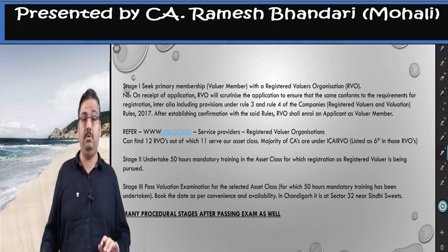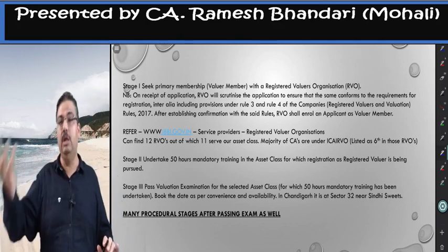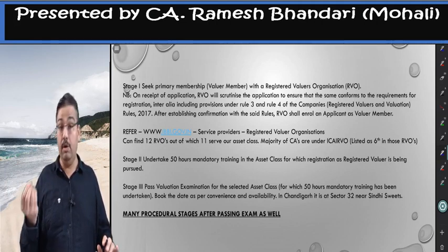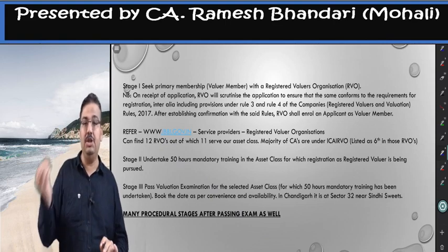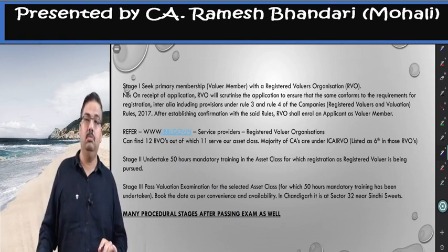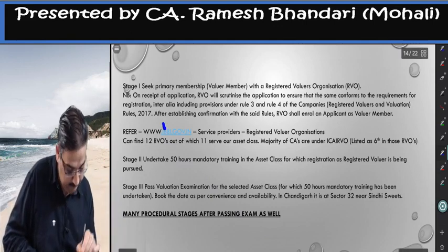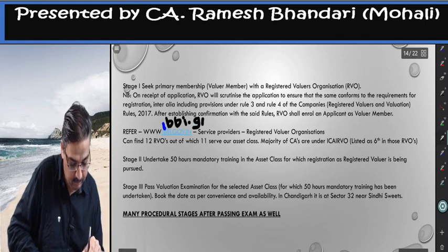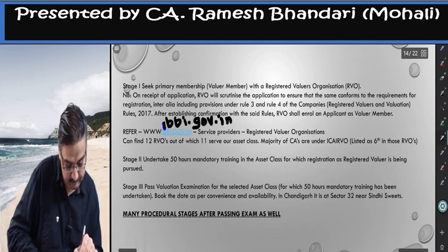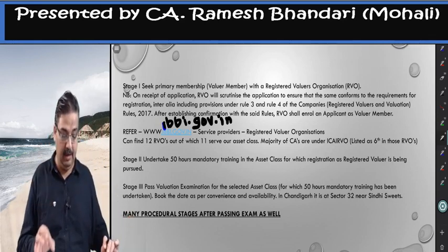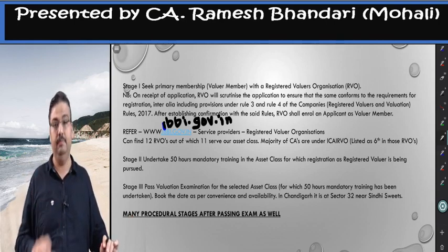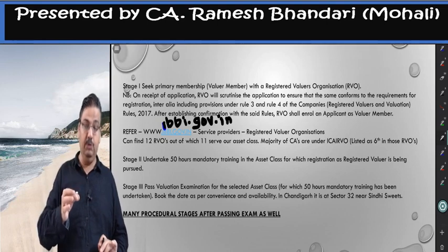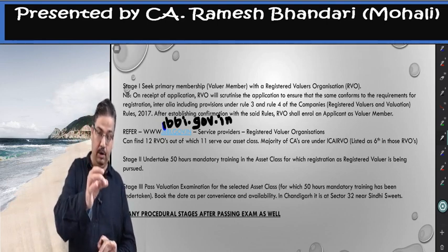The second step is to undertake 50 hours of mandatory training in the asset class for which you seek registration. These revision classes at the Chandigarh branch cannot make you eligible for the exam — for that you need to find one Registered Valuer Organization. Go to www.ibbi.gov.in — the website of the Insolvency and Bankruptcy Board of India — find their service providers, and under service providers you will find Registered Valuer Organizations (RVOs).